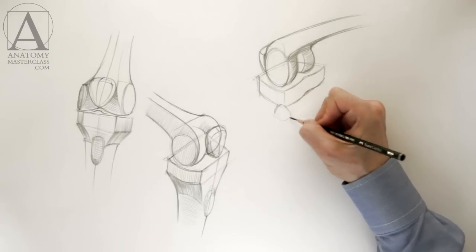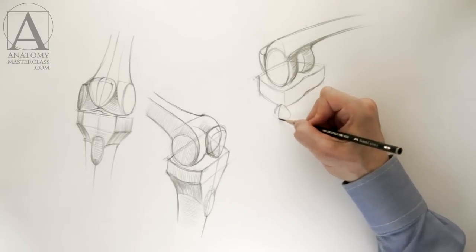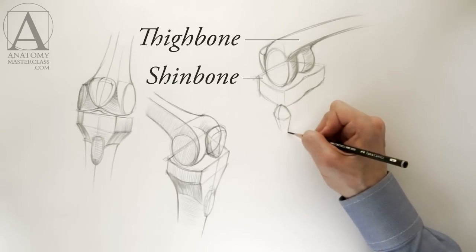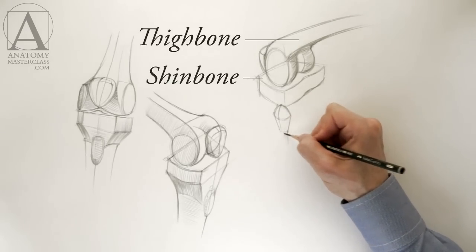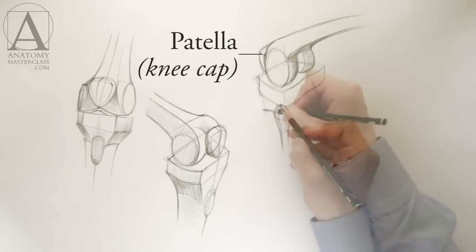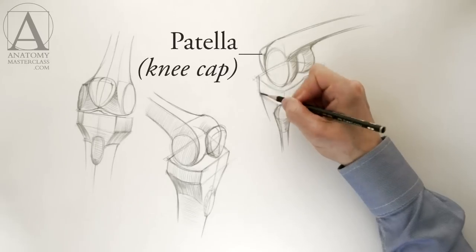On this sketch, the leg is also bent. In the joint, the flat surface of the shin bone is rotated around the cylindrical surface of the thigh bone. In front, just above the shin bone, there is the kneecap or patella.